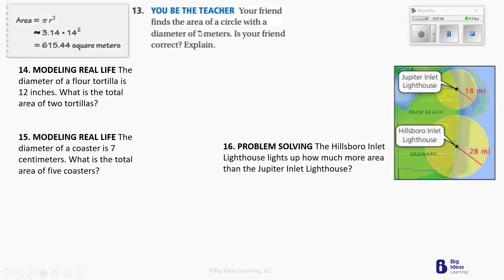Number 13 is mine. Your friend finds the area of a circle with a diameter of 7. Is your friend correct? So they're saying the diameter is 7, and they said that r squared is 14. The answer is no, because they should have taken the diameter and divided it by 2. It looks like they multiplied it by 2.